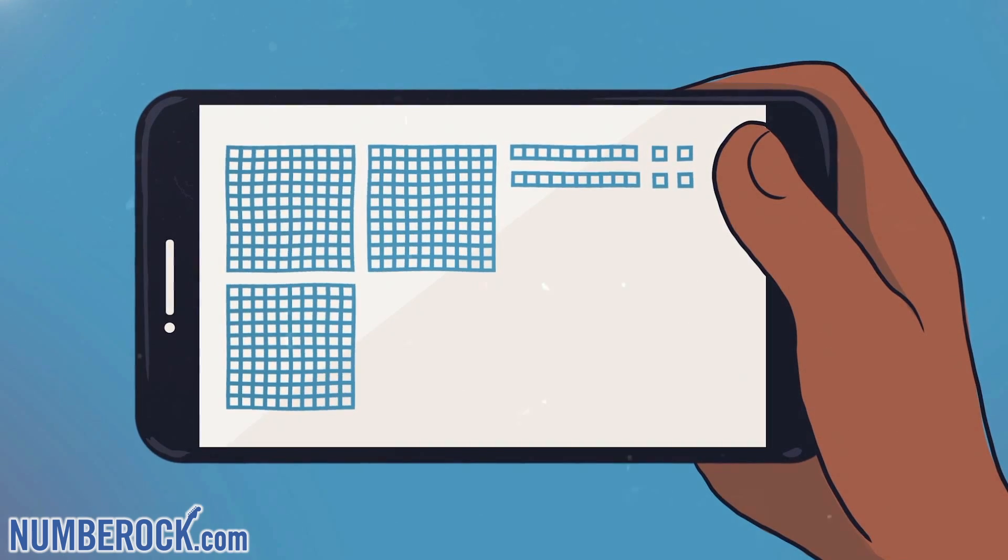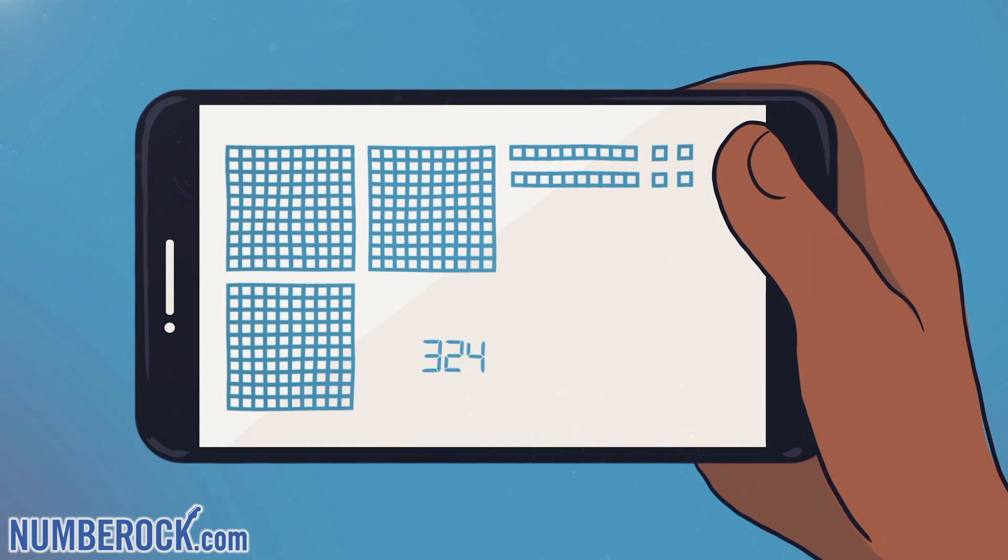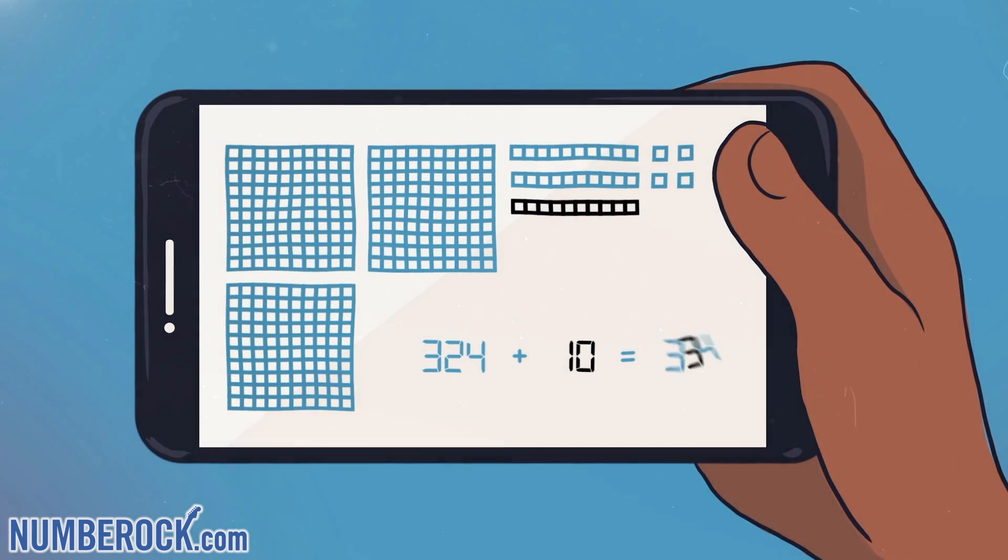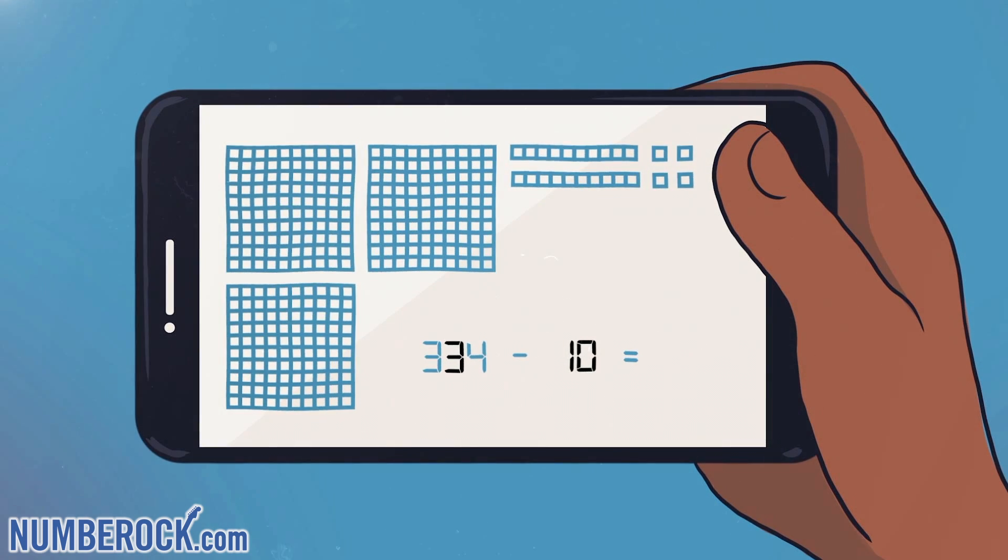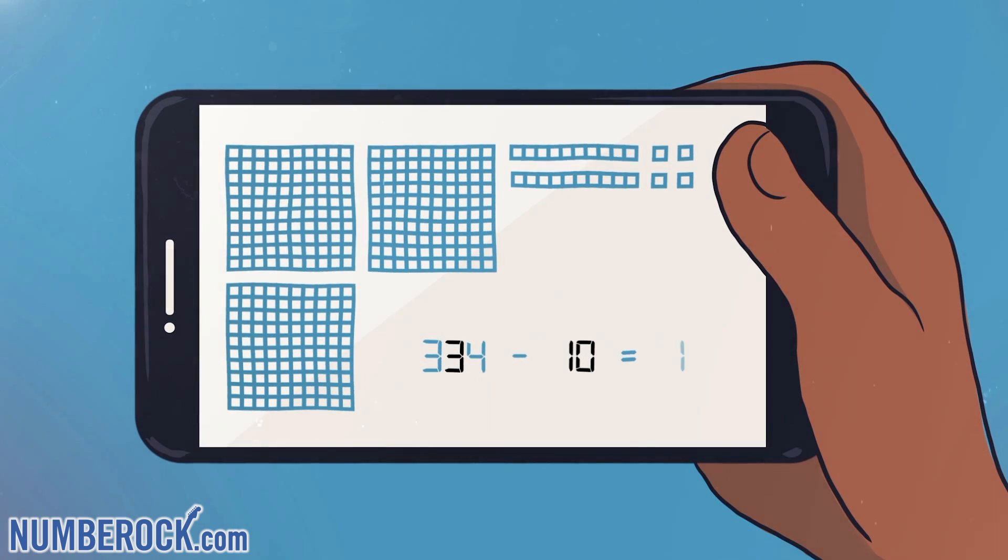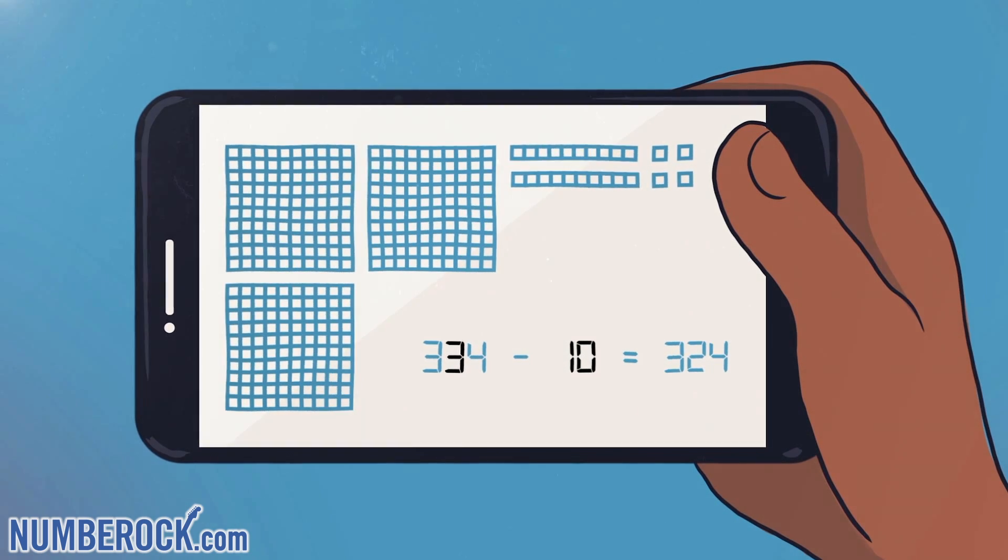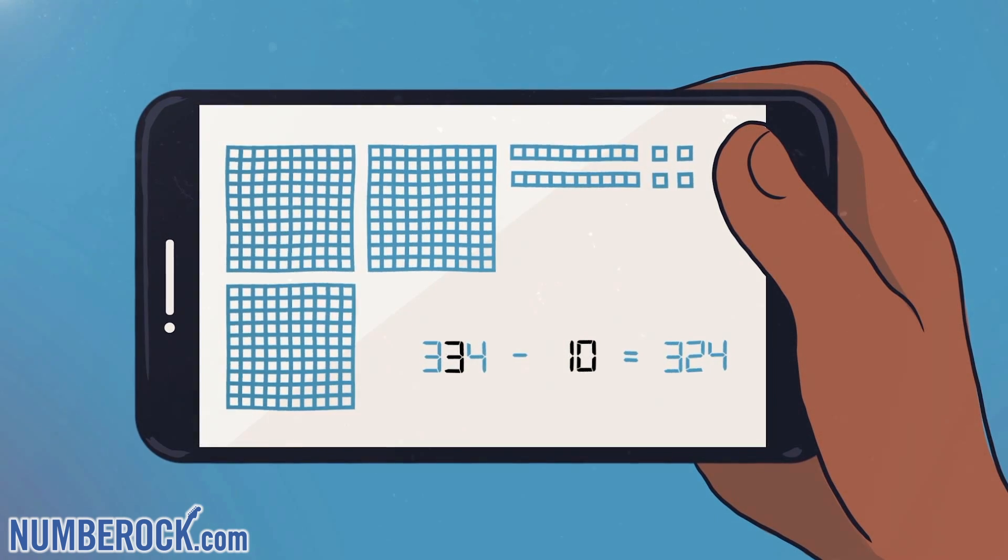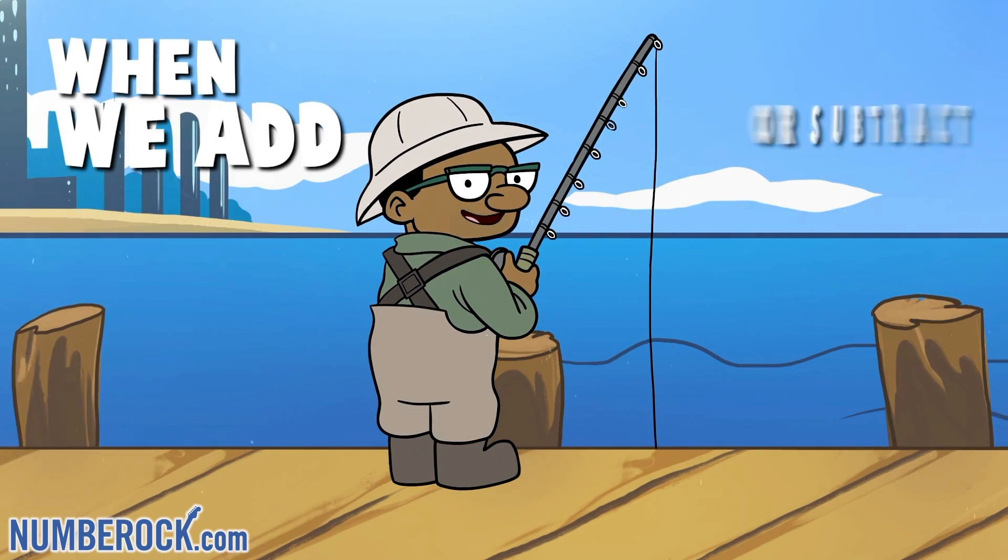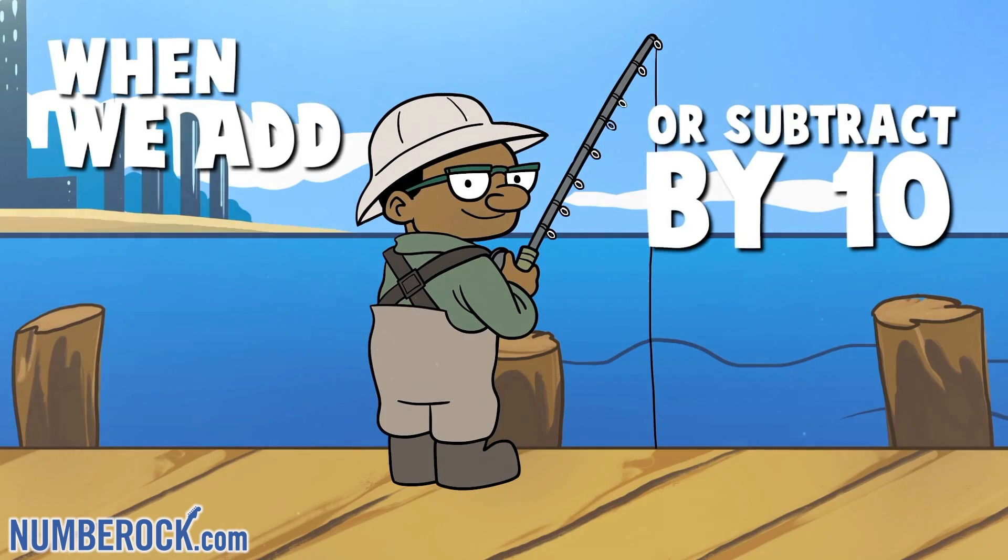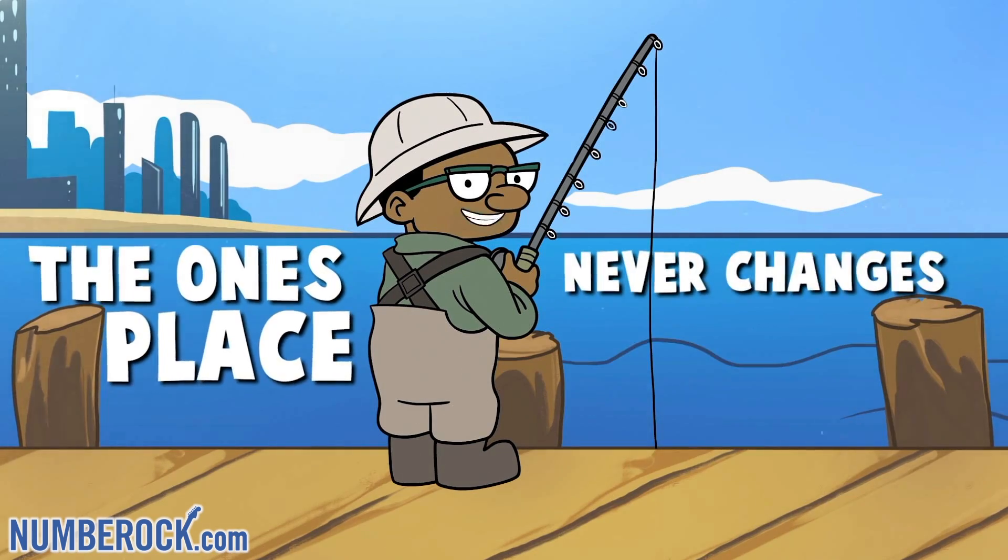On my cell phone, down on the docks I make 324 with base 10 blocks, on the screen added 10 more and the sum was 334. Now I'll take away the 10 with subtraction. On my screen I see the difference is 324 the same number as before. Think about this, when we add or subtract by 10 the one's and the ten's place never changes.